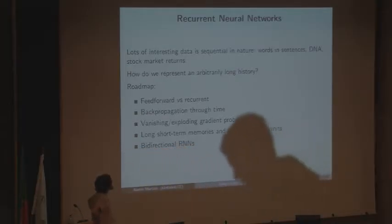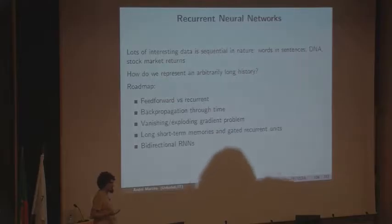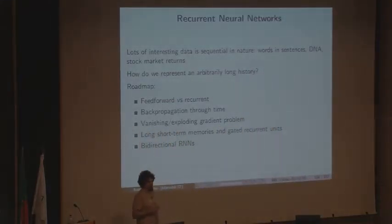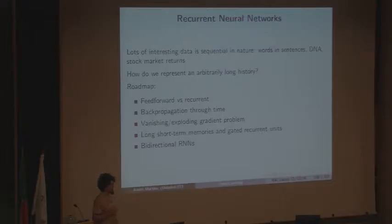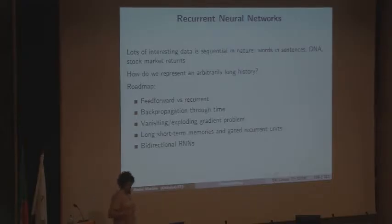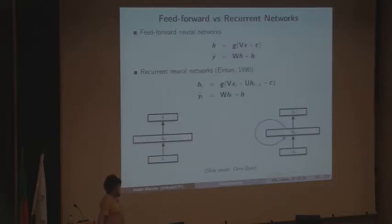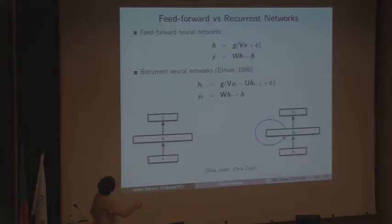The motivation to use recurrent neural networks starts with the observation that there's a lot of interesting data in nature that is sequential or temporal. Examples include words in sentences, DNA sequences, and time series like stock market returns. It's important to be able to represent an arbitrarily long history, and this is going to be the roadmap for this session.